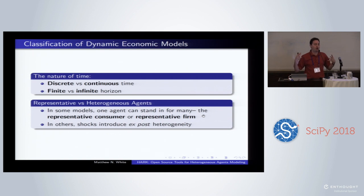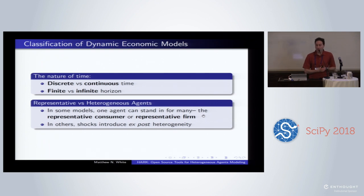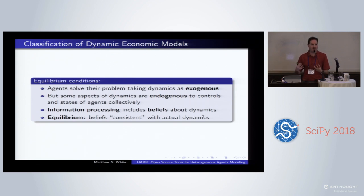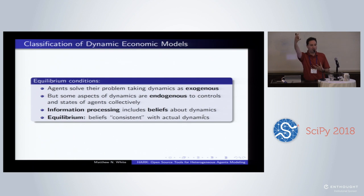In the class of models we're talking about here, we're talking about models with heterogeneity — people are different from each other, both in the ex-ante sense that they might have different preferences or be different types of agents entirely (one agent is a firm, another is a consumer), but also ex-post heterogeneity: different streams of random shocks happen to them along the way. So there's a whole distribution of outcomes, and the distribution of states that people find themselves in matters.